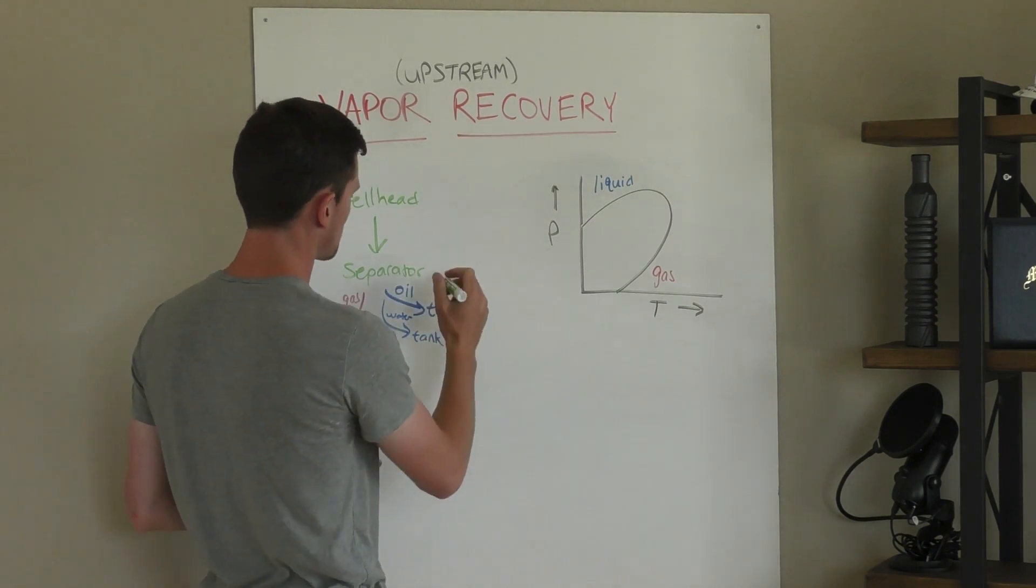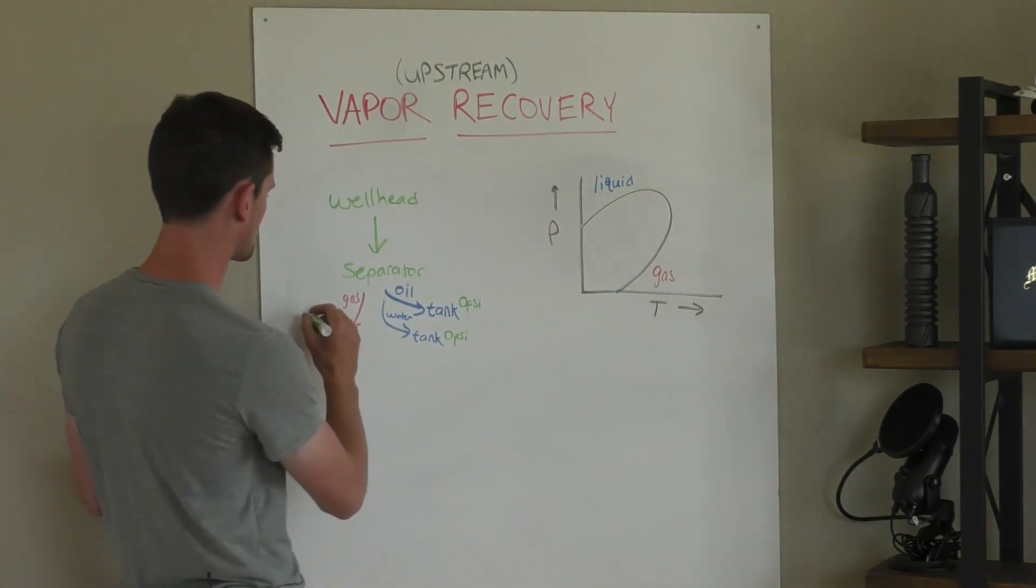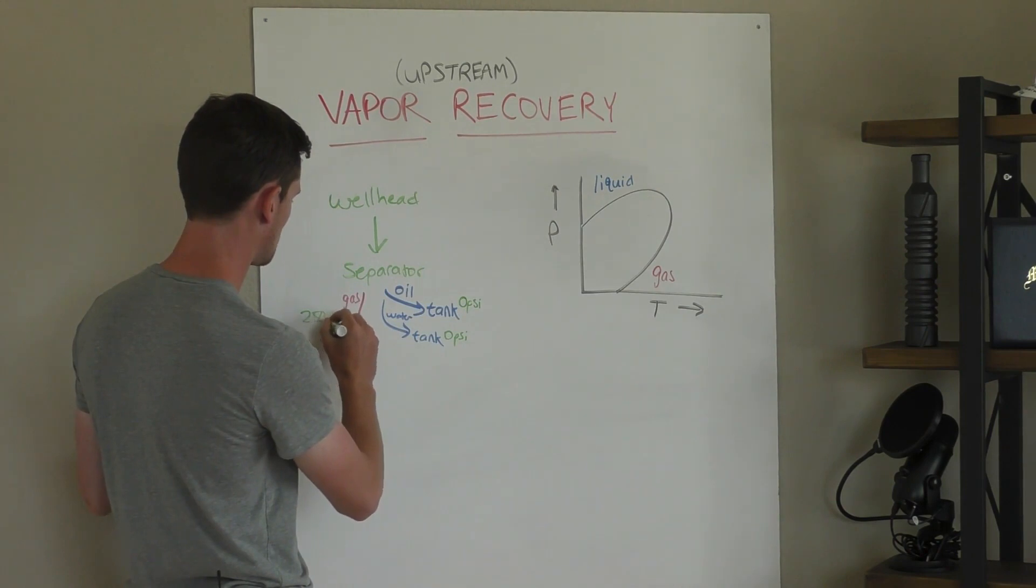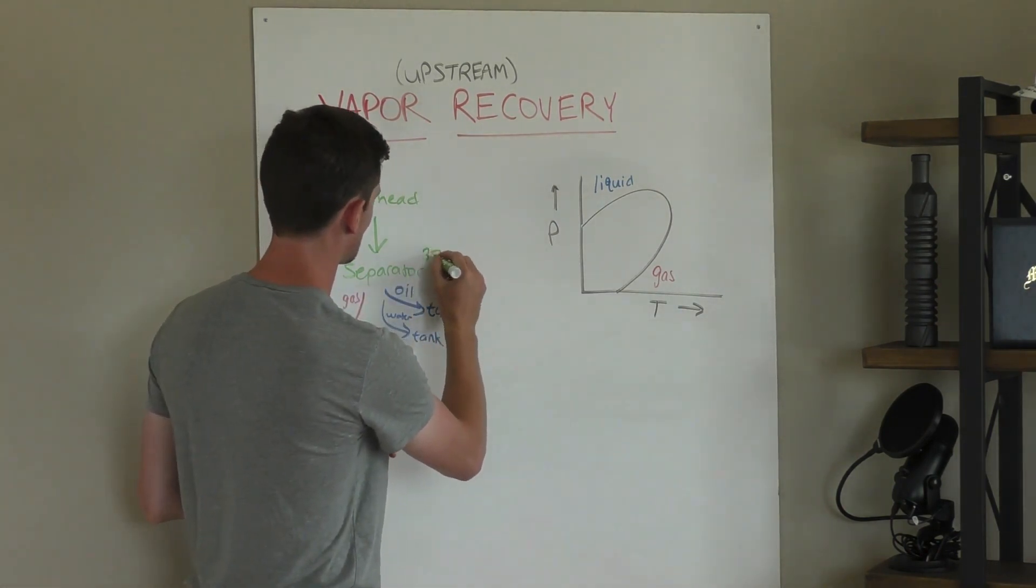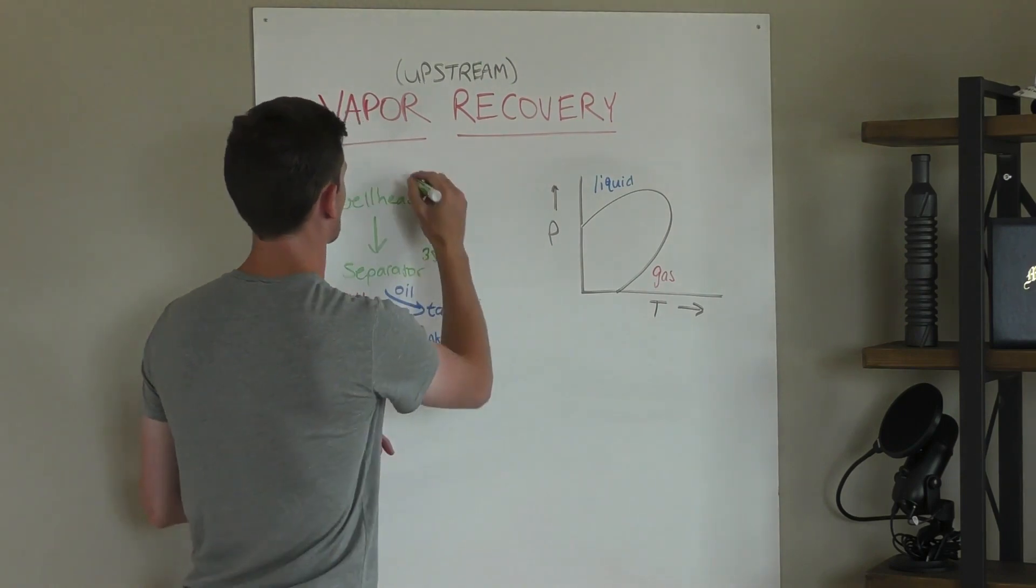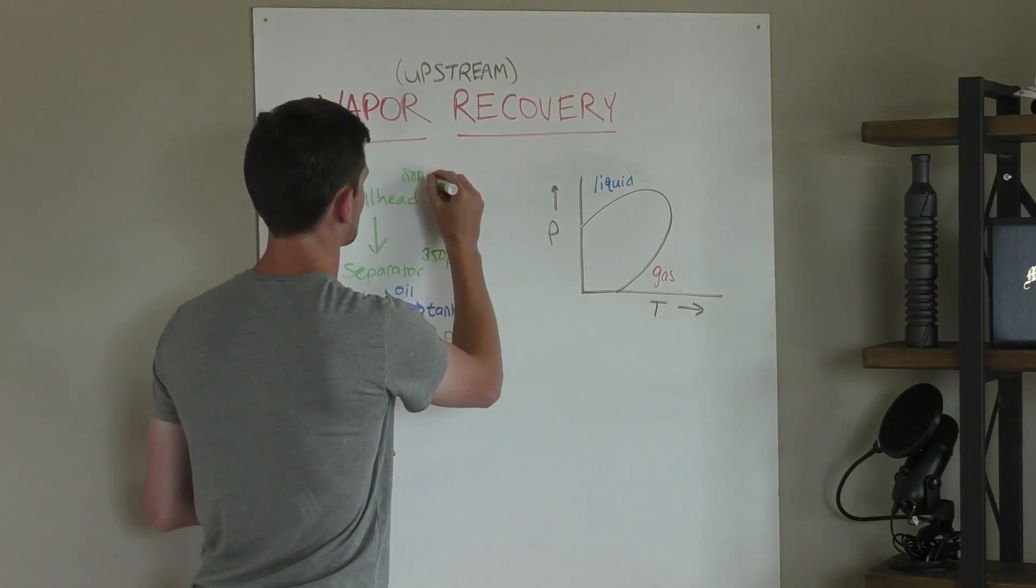Separator, let's say for fun... let's start with the sales. The gas sales, let's say, is 250 psi. Let's say your separator is 350 psi. And let's say your wellhead is doing pretty good, you got 800 psi on your wellhead.